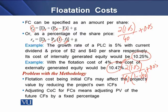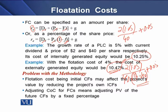We have certain problems with this methodology. First, the flotation cost being an initial cash flow may affect the project's value by reducing the project's own initial cash flow, as seen in the example where we reduced proceeds by the flotation cost. Second, adjusting the cost of capital for flotation cost means adjusting the present value of future cash flows by a fixed percentage. In the example, the 0.22% increment becomes a permanent part of the cost of equity, so all future cash flows are discounted at that higher rate — whereas flotation cost is not actually a permanent item.